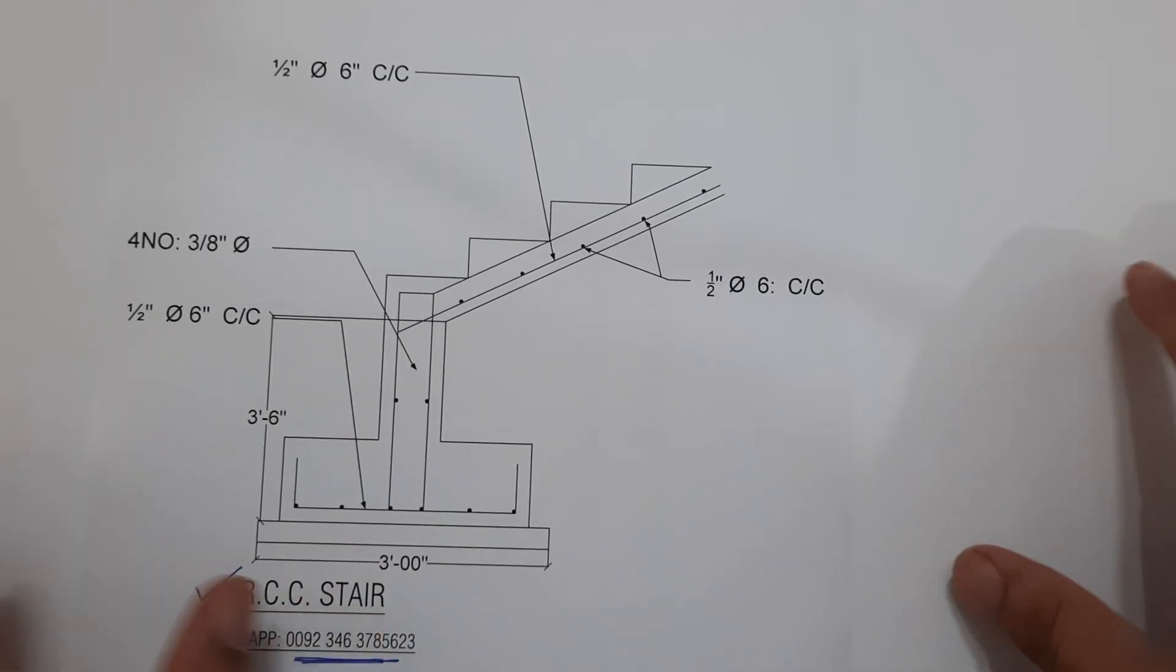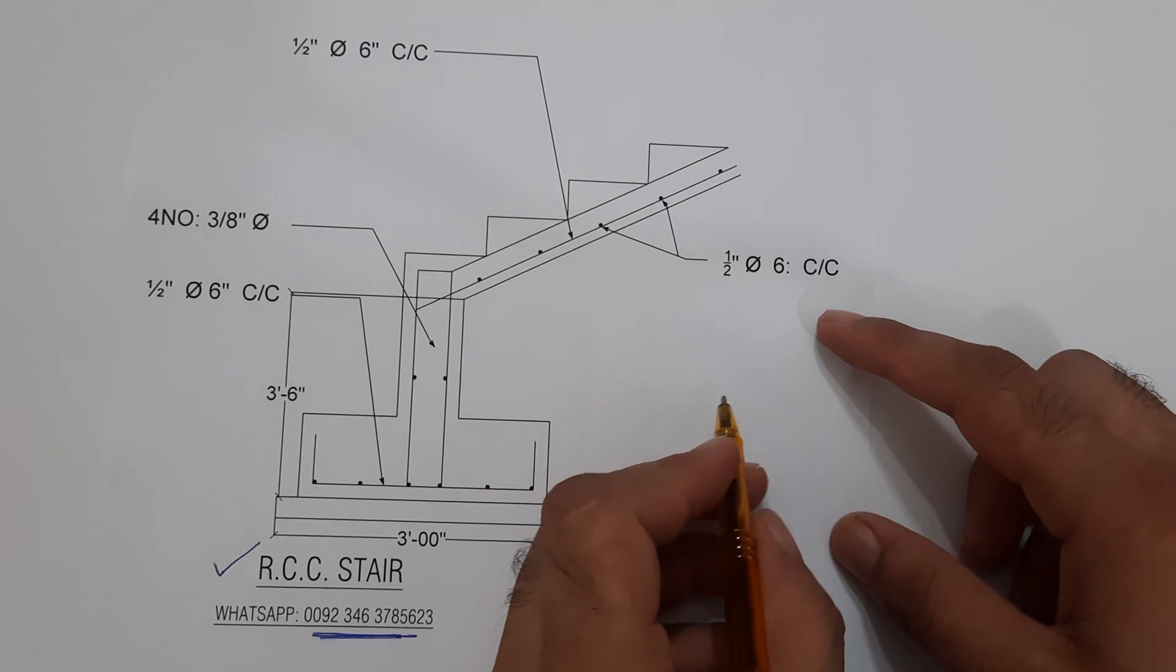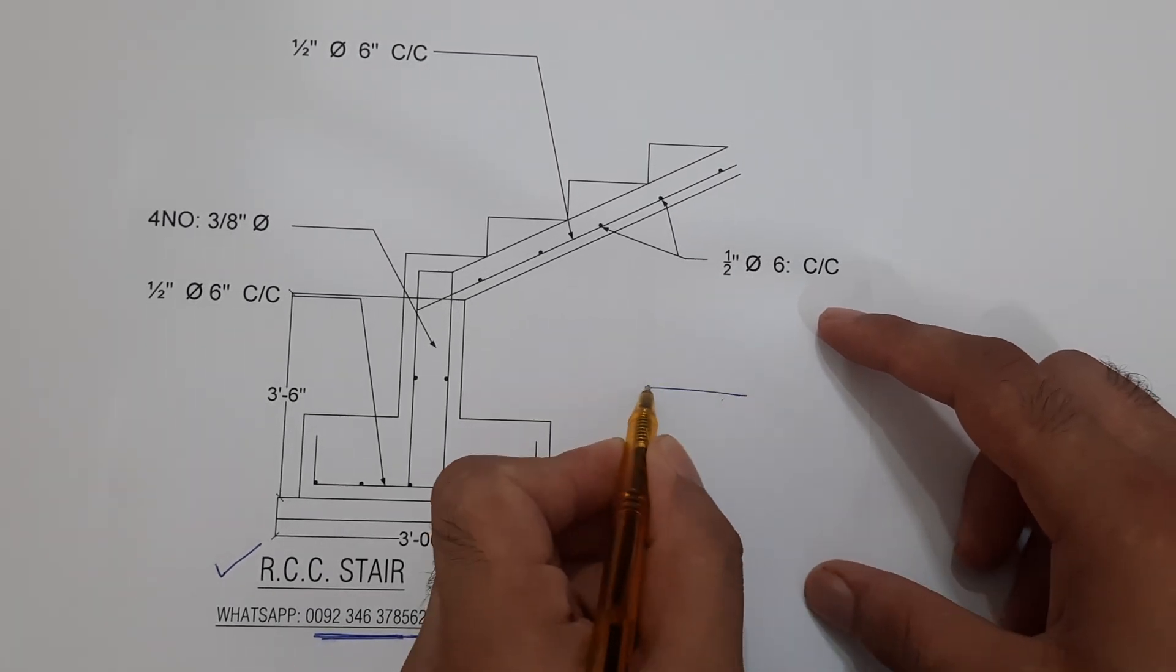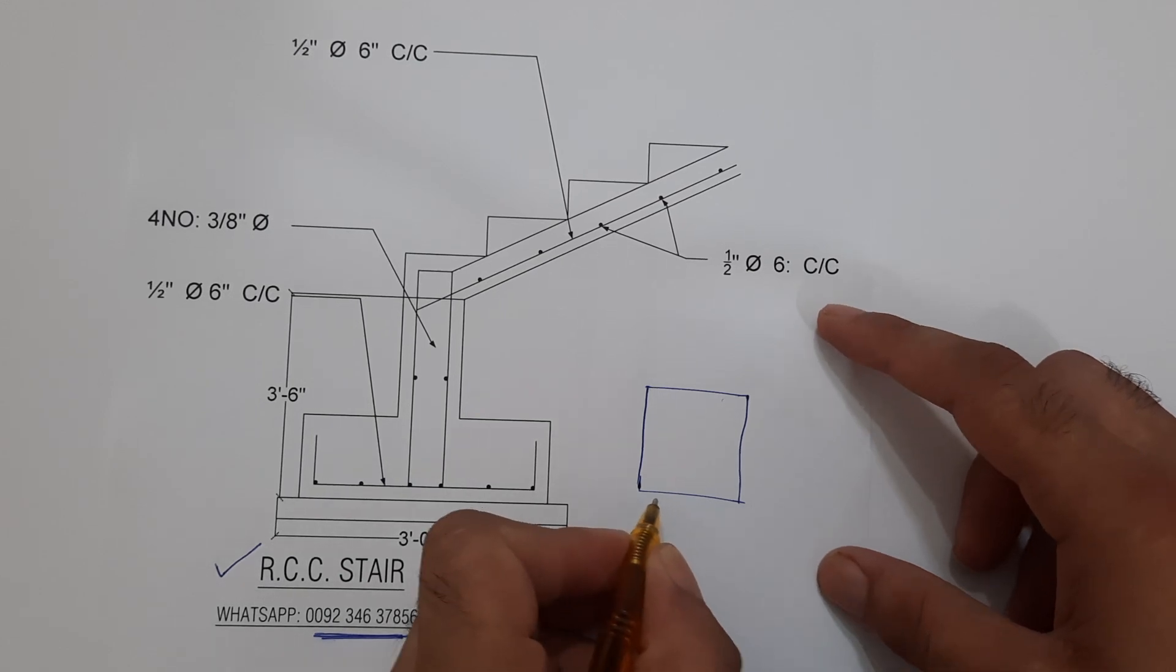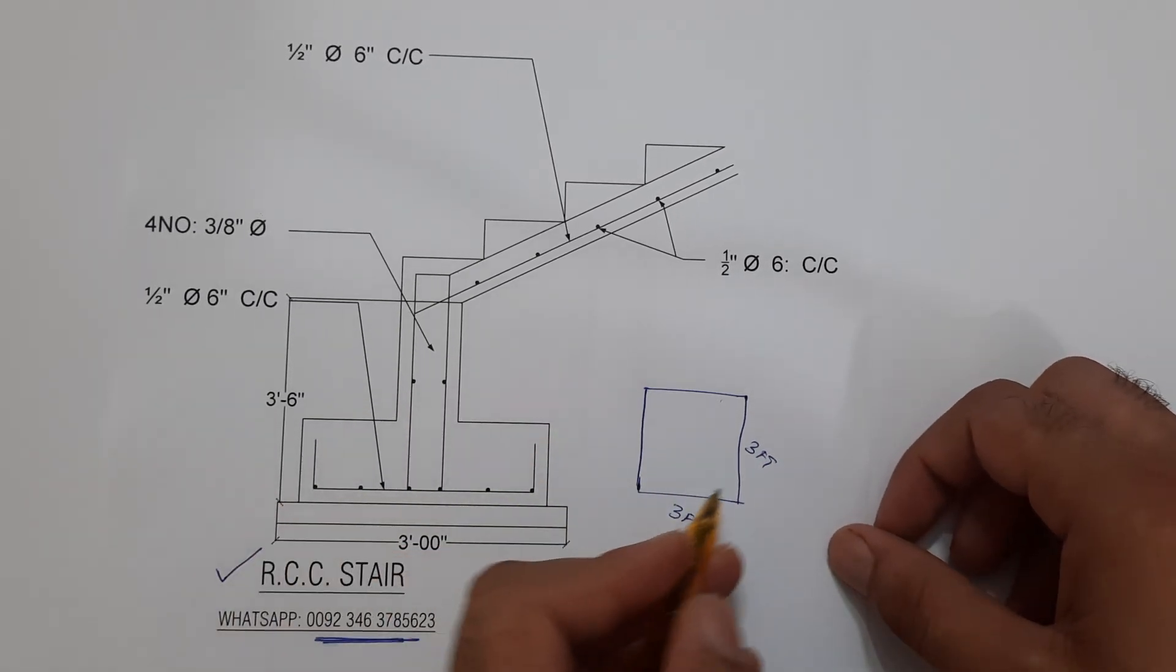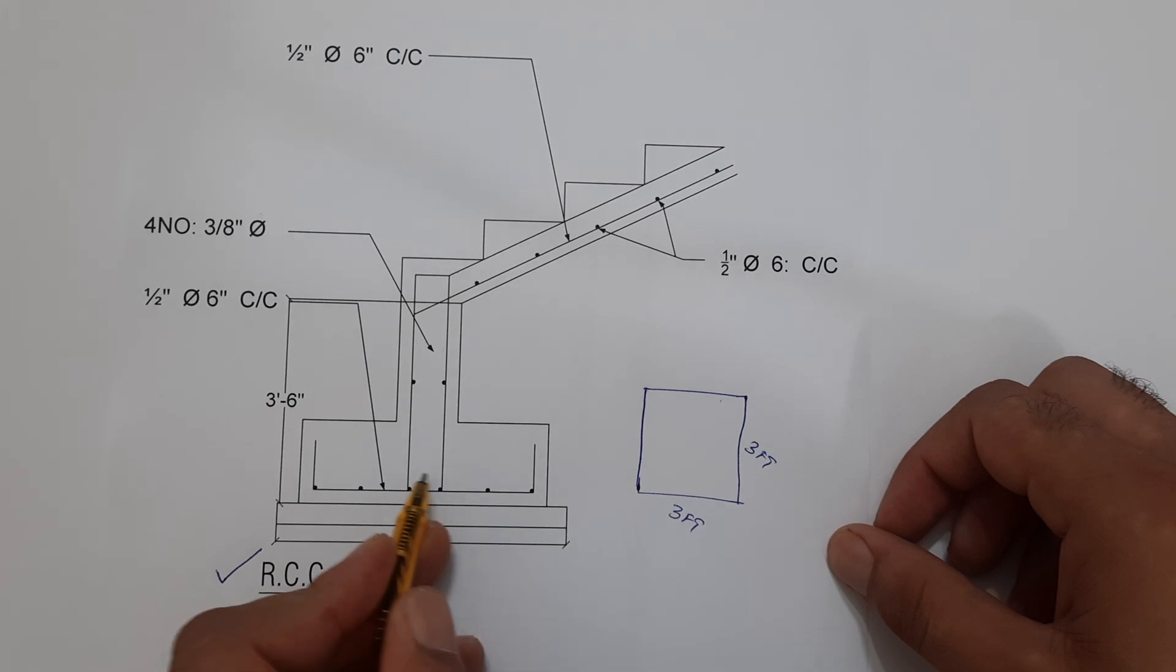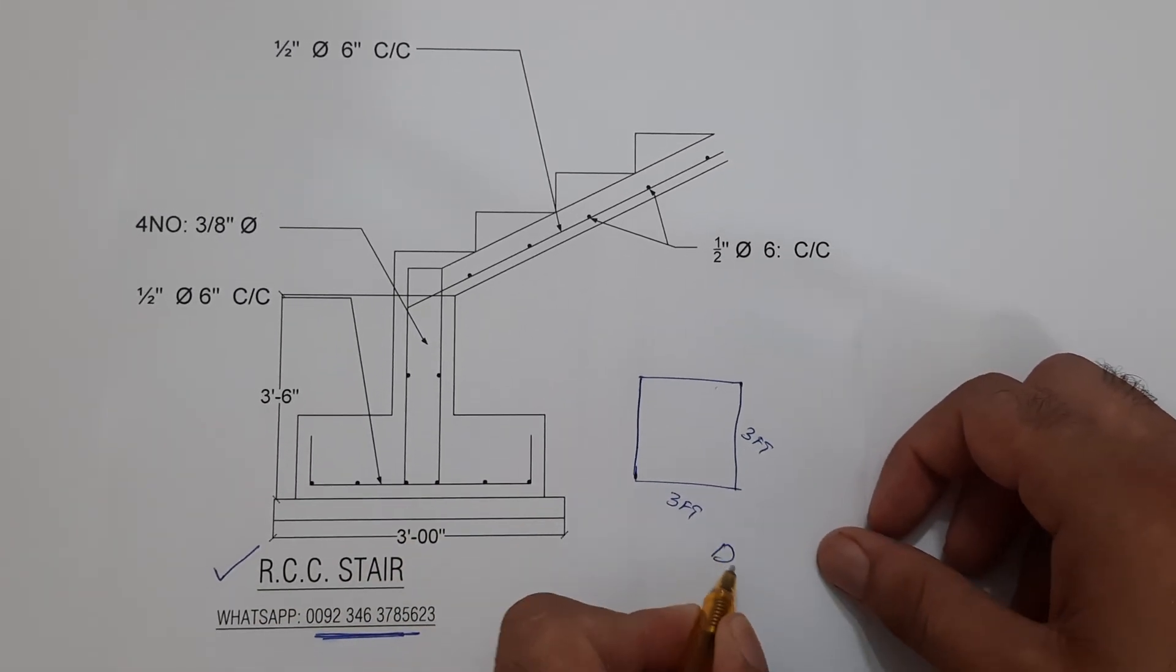Guys, you can see this is the section of stair. First of all, the foundation and the stair foundation size or the footing size should not be less than... This is square footing which should not be less than three feet by three feet. This is the size of RCC footing for this staircase.